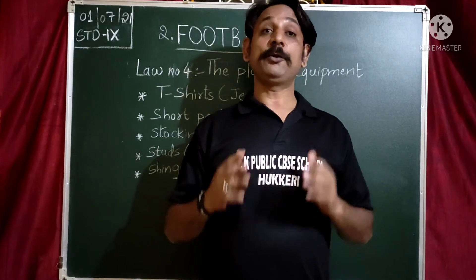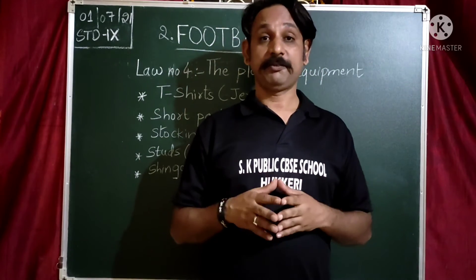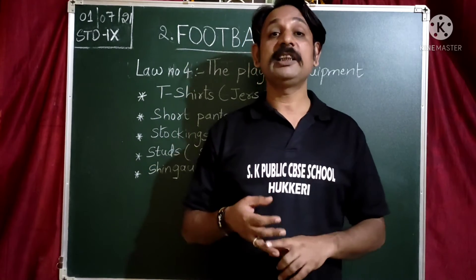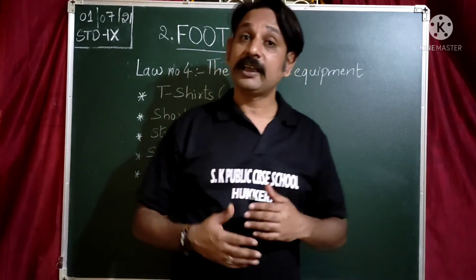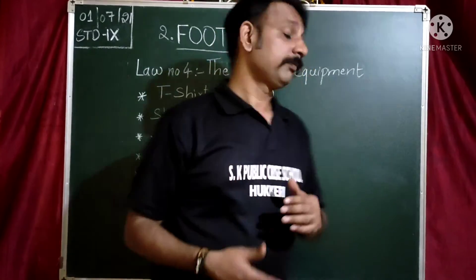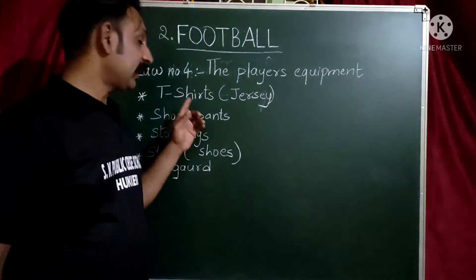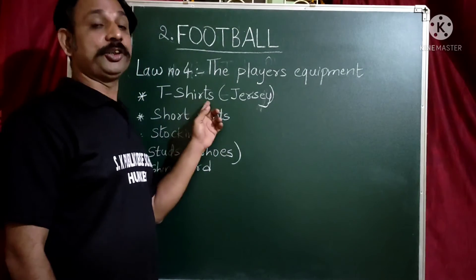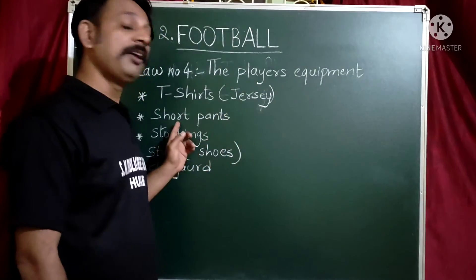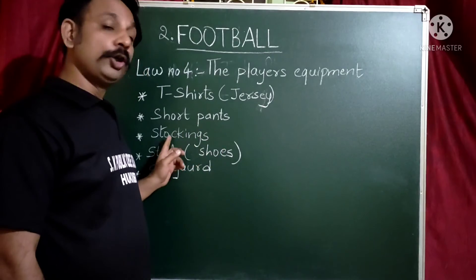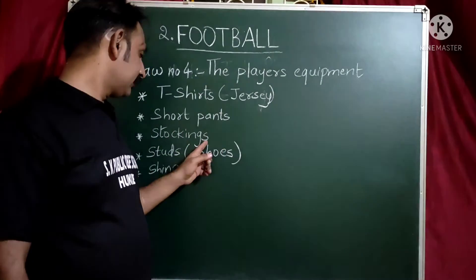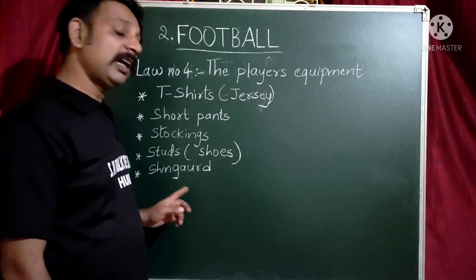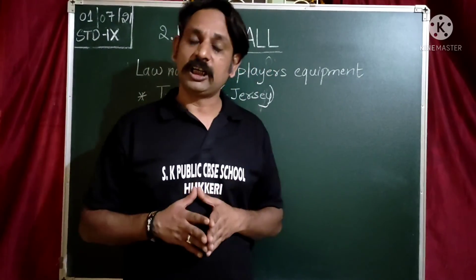My dear children, this is the equipment of the player in football. Let us review the equipment one by one again. The first thing is the jersey — it is called a t-shirt, but in football it is a jersey. Then we have short pants, stockings, struts — the football shoes — and the last one was the shin guard.